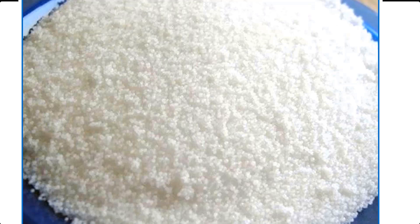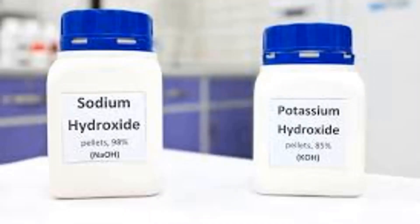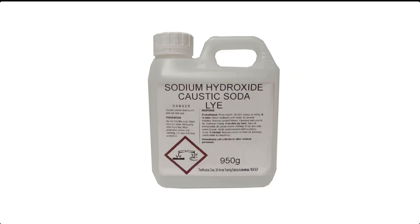In classroom chemistry, caustic soda belongs to a class of compounds called a base. It can also be called an alkali because it is soluble in water. If caustic soda is left in the air, it absorbs water readily to form a solution. This means that caustic soda in the crystalline state must be stored in an airtight container.